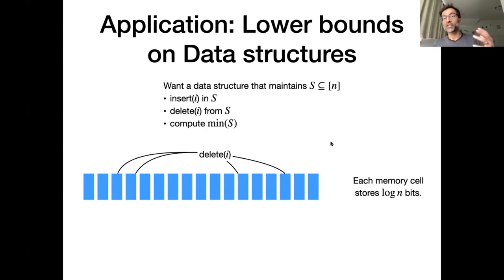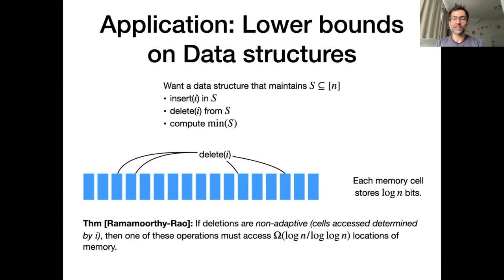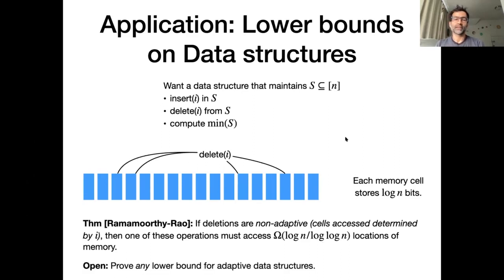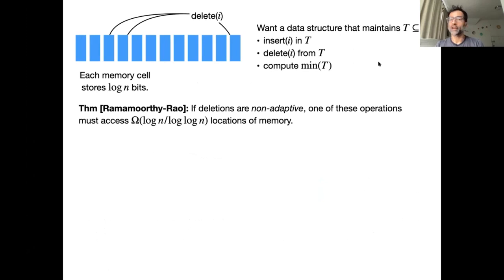There's a huge space of potential algorithms. We have some solutions but don't know the best. The sunflower lemma, in joint work with my former student Ramamurthy, gives a lower bound: any data structure accomplishing this task must access at least log n / log log n memory locations for at least one of these operations. No algorithm can access much less than log n / log log n for all operations.